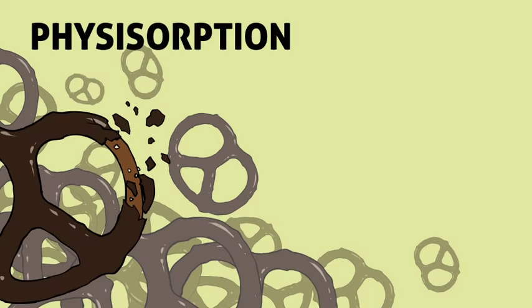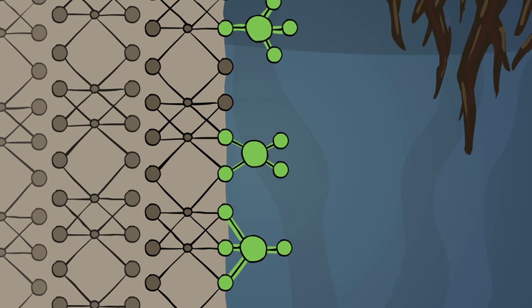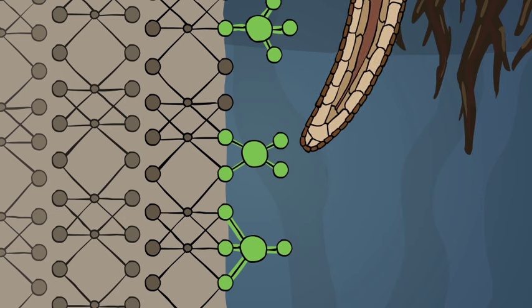So to review, physisorption is like the chocolate-covered pretzel. Chemisorption, which is fusion, is like the chocolate cake. Anyway, this new substance locks the ion away so it can't be knocked away from the surface or taken up by plants or bacteria.